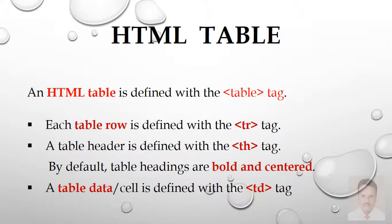First, let me explain what is meant by HTML tables. An HTML table is defined with the table tag. If you want to implement a table inside HTML, you want to use the table tag. Each table row is defined with the tr tag. If you want to define a table row, you want to use the tr tag.